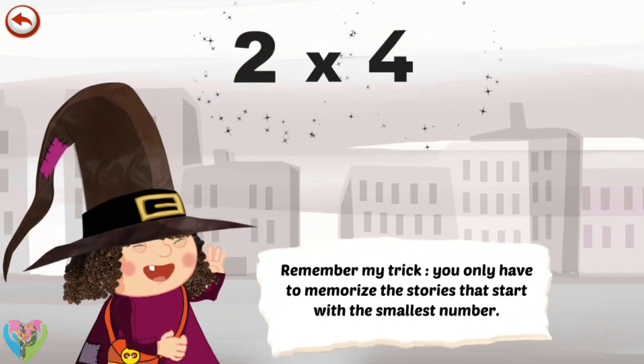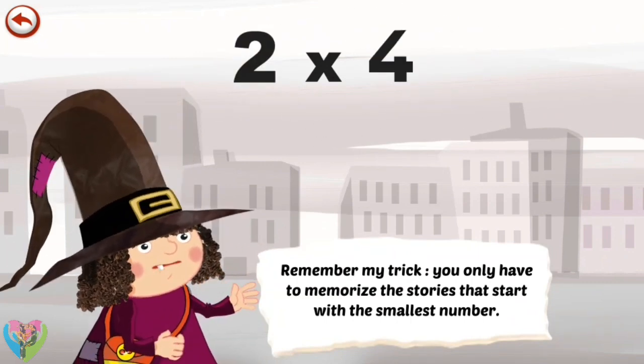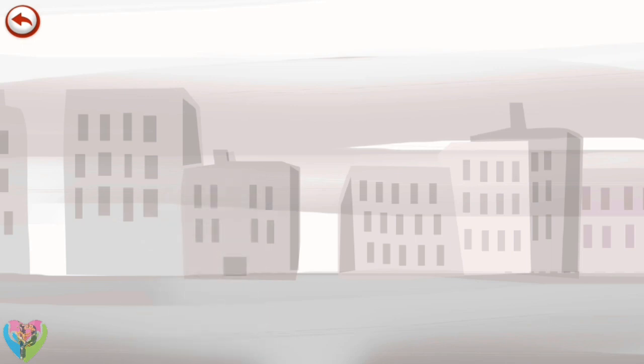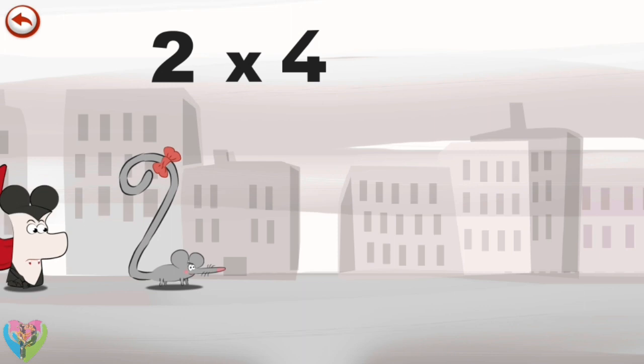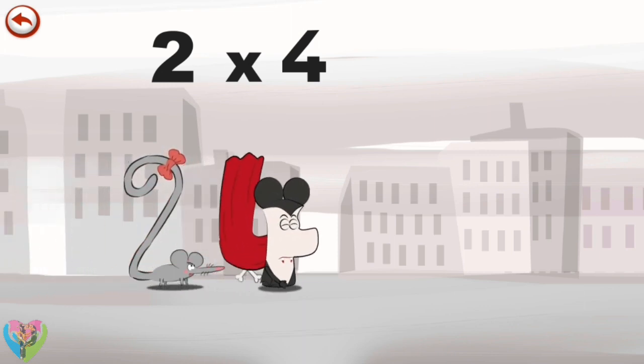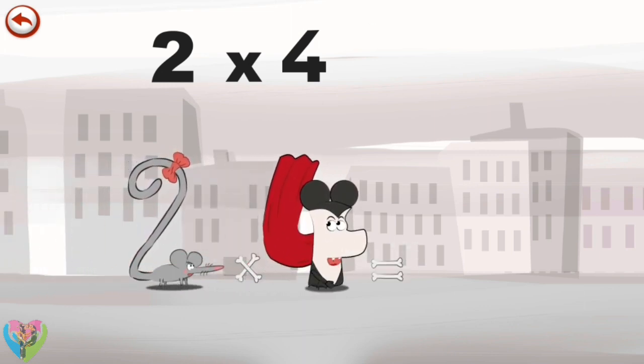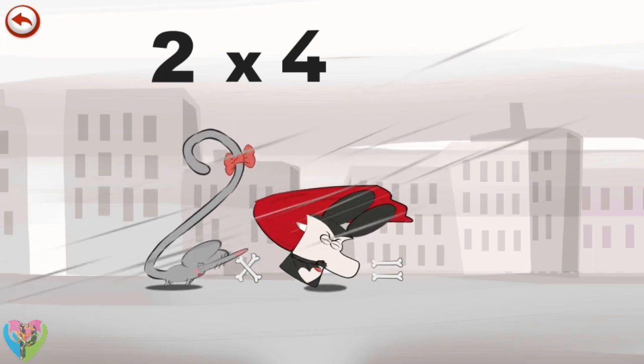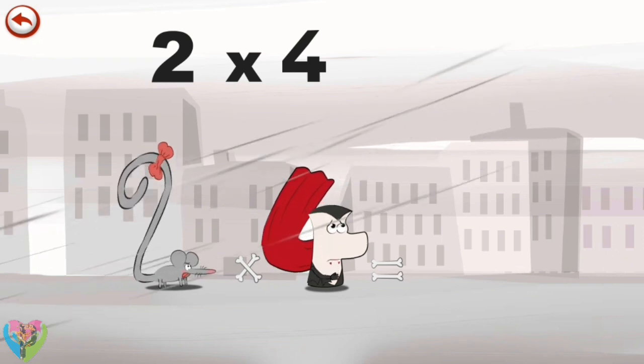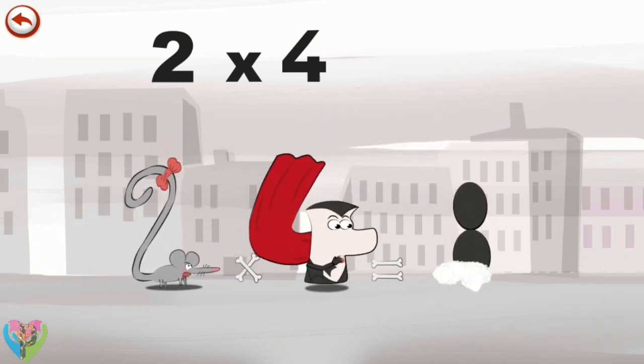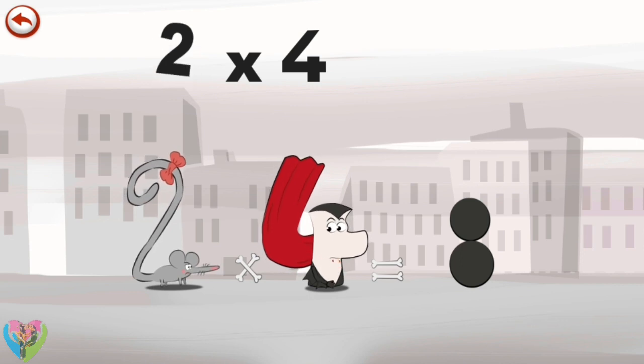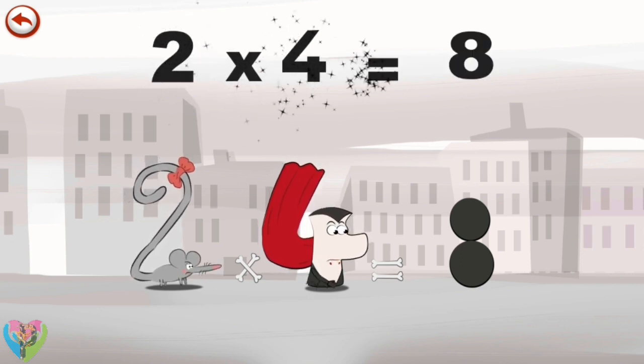Remember my trick, you only have to memorize the stories that start with the smallest number. What's the story of 2 times 4? When 2 Squeaks sees Vamp 4 disguised as a mouse, she is not so sure, but a gust of wind blows away his false ears in the shape of an 8. And the imposter is revealed. 2 times 4 is 8.